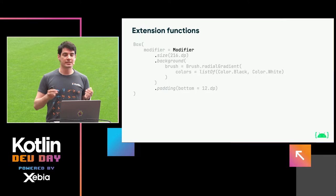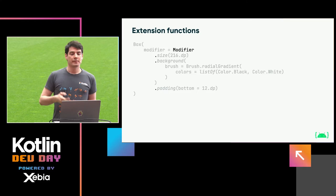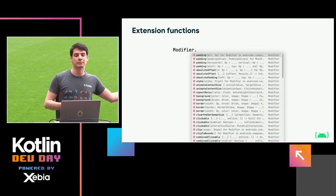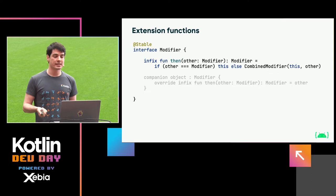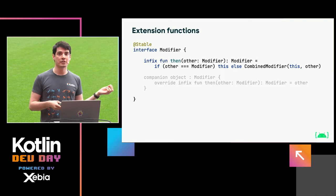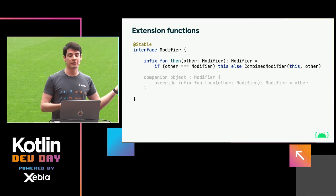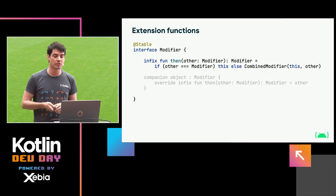Let's explore how this API is actually implemented. You can write modifier and then start chaining various calls onto it. If you start auto-completing in your IDE on modifier, you'll see dozens and dozens of modifiers for padding, borders, backgrounds, and all the things you would want on a piece of UI. If we jump into the implementation, we'll see that modifier itself is an interface. I want to highlight the then function inside it, which is part of the implementation of this chaining behavior — it can take another modifier and return a new combined modifier.